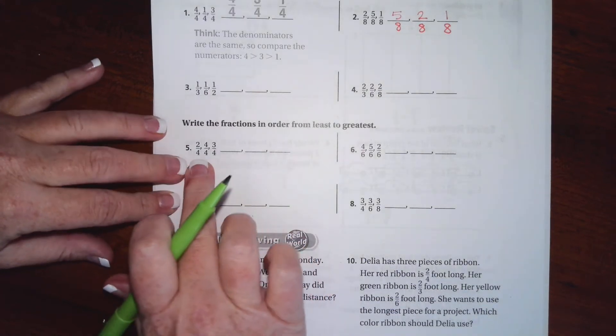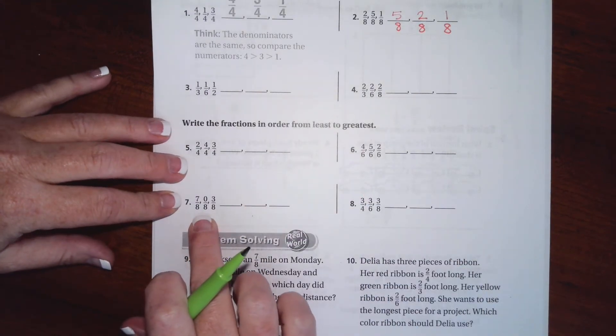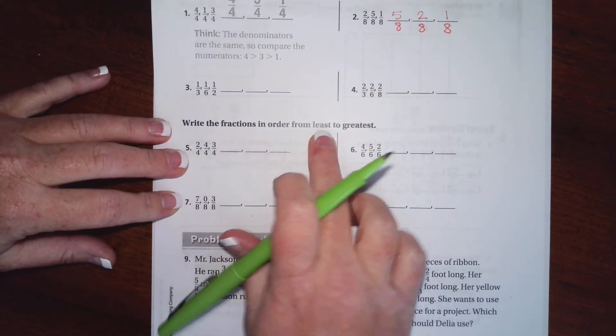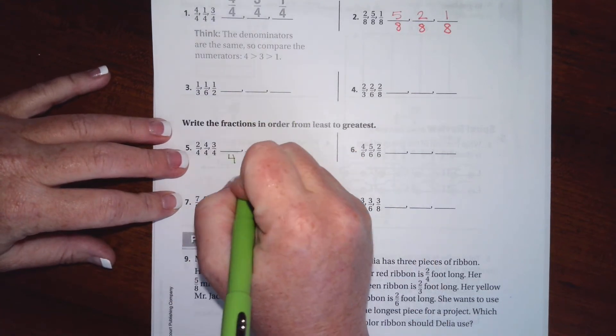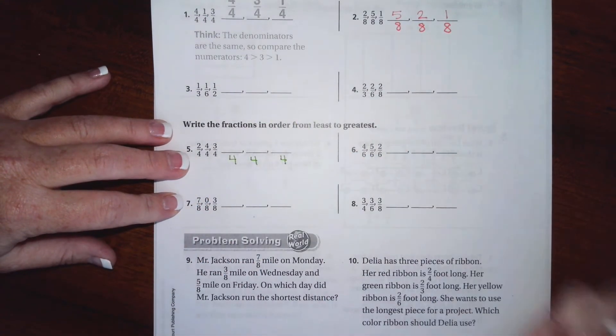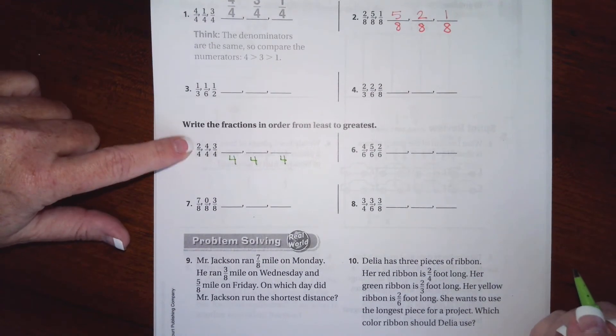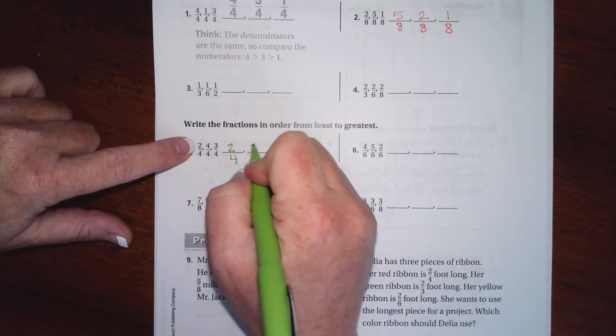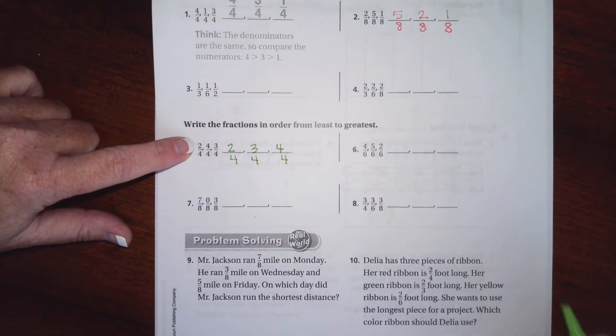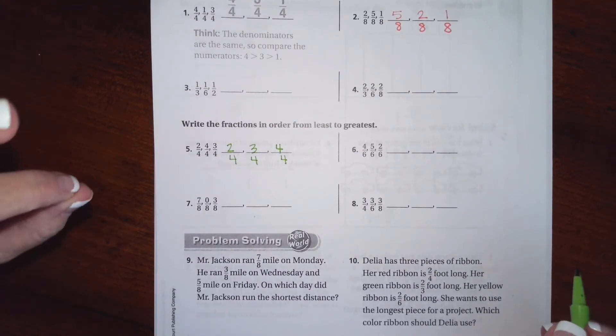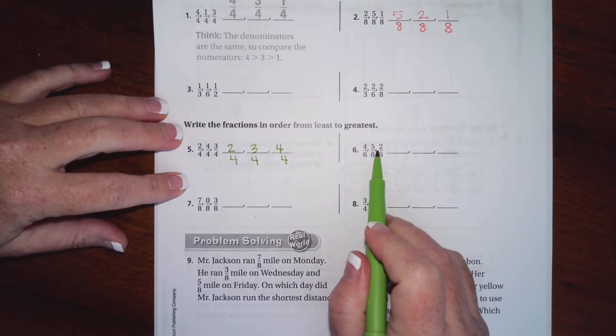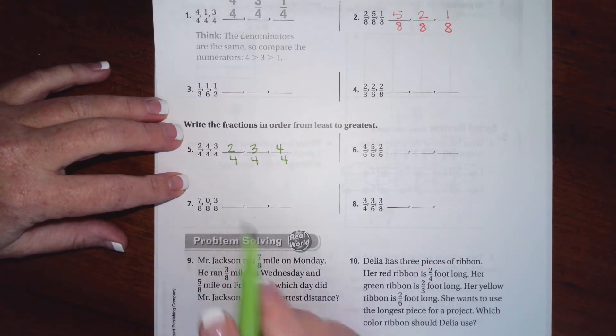Now this one's from least to greatest, so it's going to be smallest to biggest. The smallest top number is two, then three, then four. So go ahead and do this: smallest to biggest, smallest to biggest.